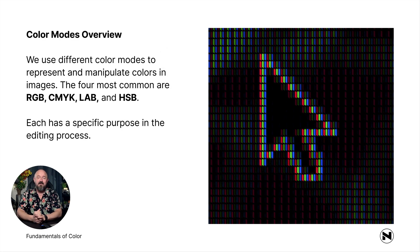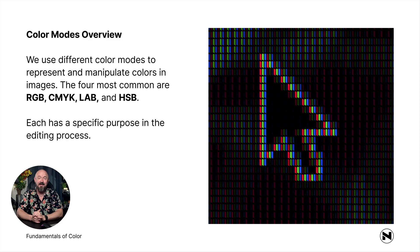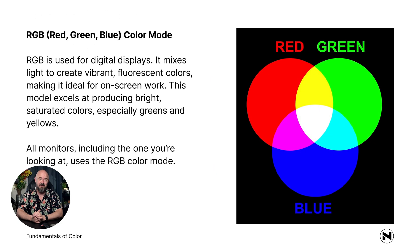Now let's look at color modes. We use different color modes to represent and manipulate colors in images. The four most common are RGB, CMYK, LAB, and HSB, and each has a specific purpose in the editing process.